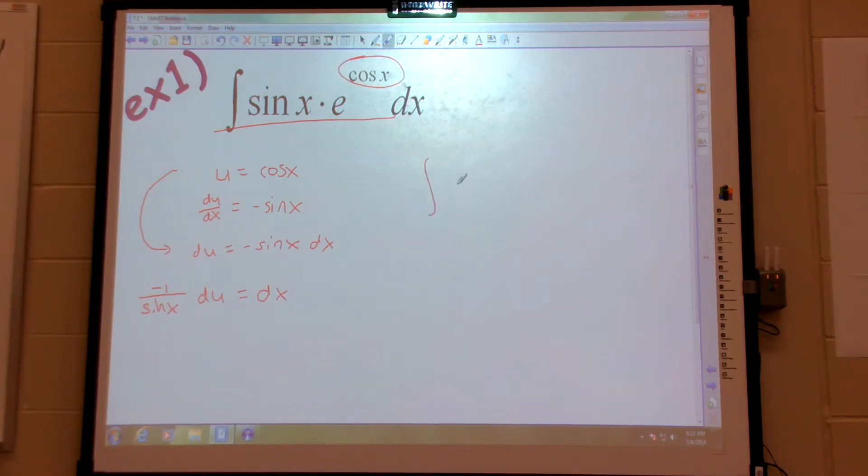So, back to my integral. This was u, correct? Yeah. So, I now have the integral of sine x e to the u. But, instead of dx, dx equals all this. Right? So, instead of having dx, I'm going to plug in all that. Negative one over sine x du. There's no more dx. I plugged in for it.